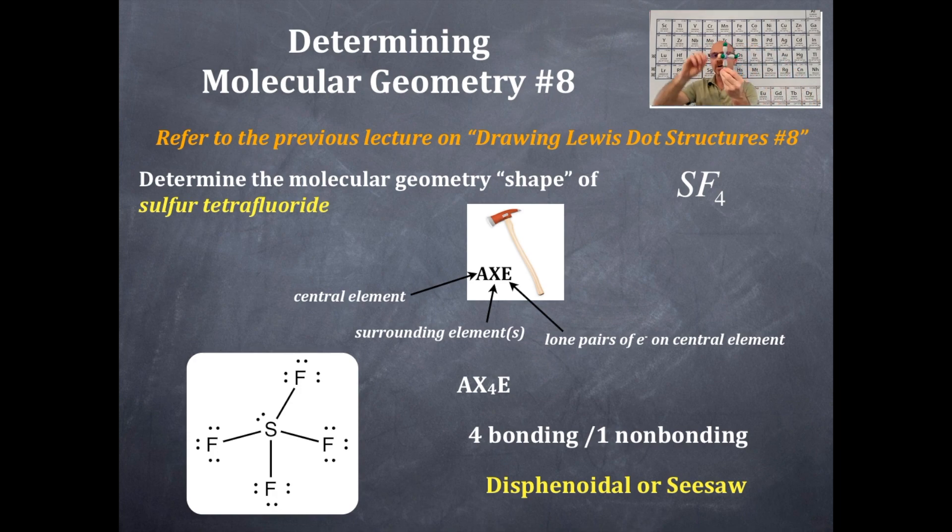such that you get this molecule right here. And that is disphenoidal. It's also called seesaw and really and truly, here's the seesaw. So on a flat surface, you should be able to see the seesaw shape back and forth, right?